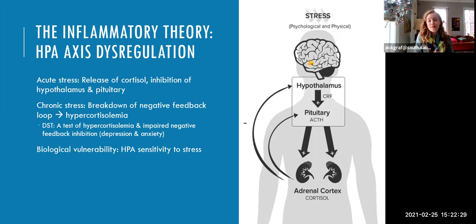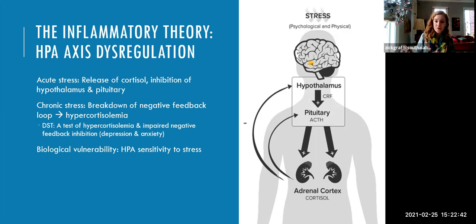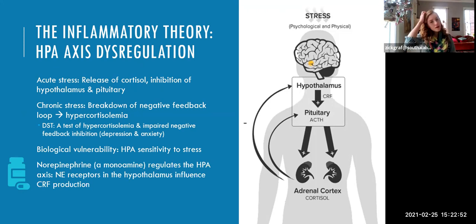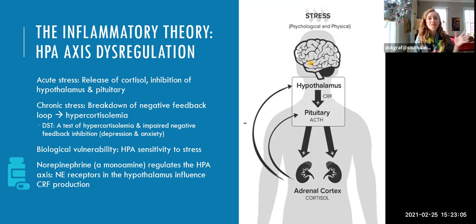One biological vulnerability shared between anxiety and depression is having an HPA axis that's really sensitive to stress. If this response goes off more often than normal, that can put you at risk for impaired negative feedback — the more often the system is activated, the weaker the negative feedback becomes. The monoamine system is also implicated in the HPA axis: norepinephrine is involved in regulating HPA axis functioning. Norepinephrine receptors in the hypothalamus help get the whole cycle going — norepinephrine is the neurotransmitter used to signal to the hypothalamus that there's a stressor and that the hypothalamus should start producing CRF.